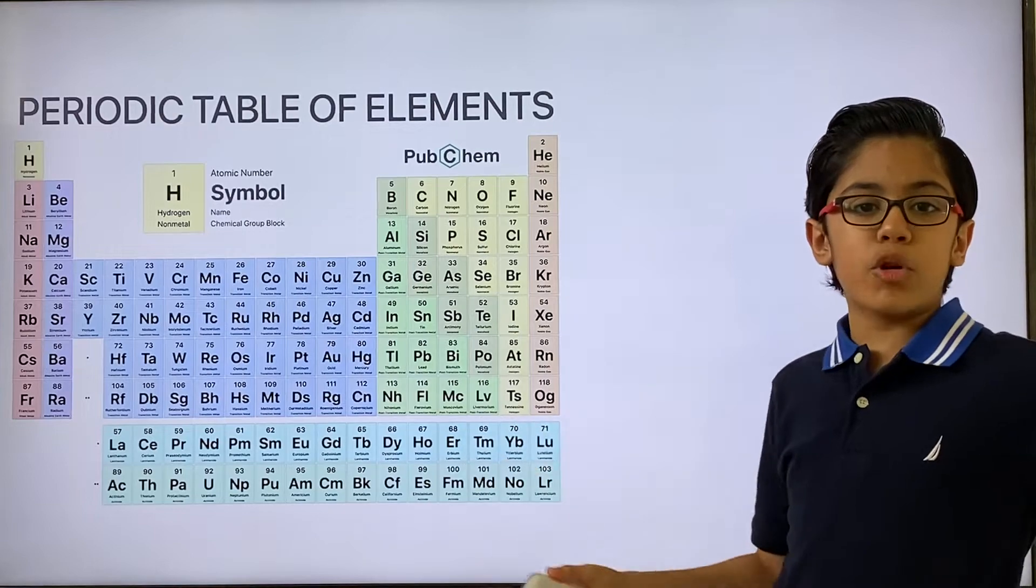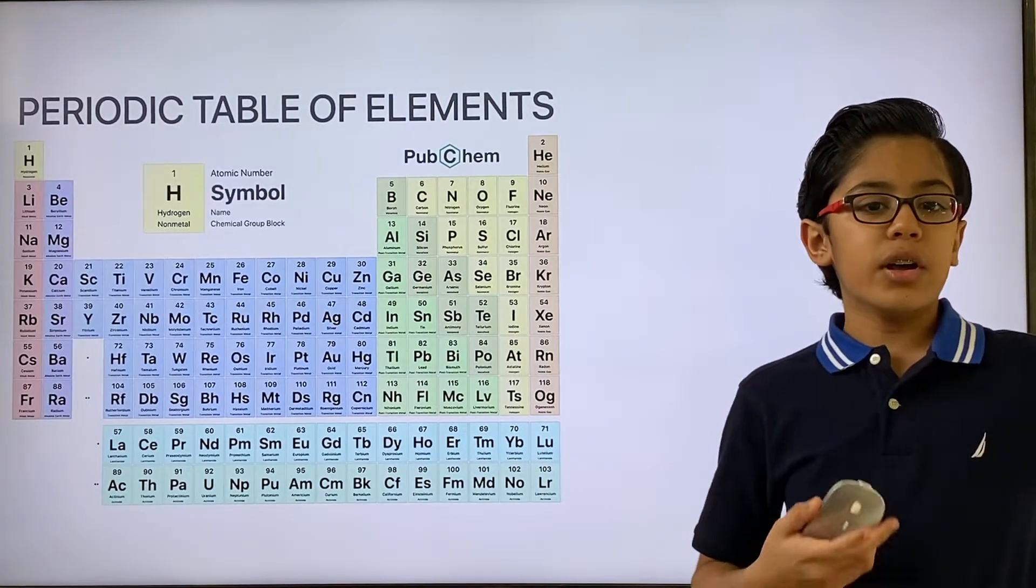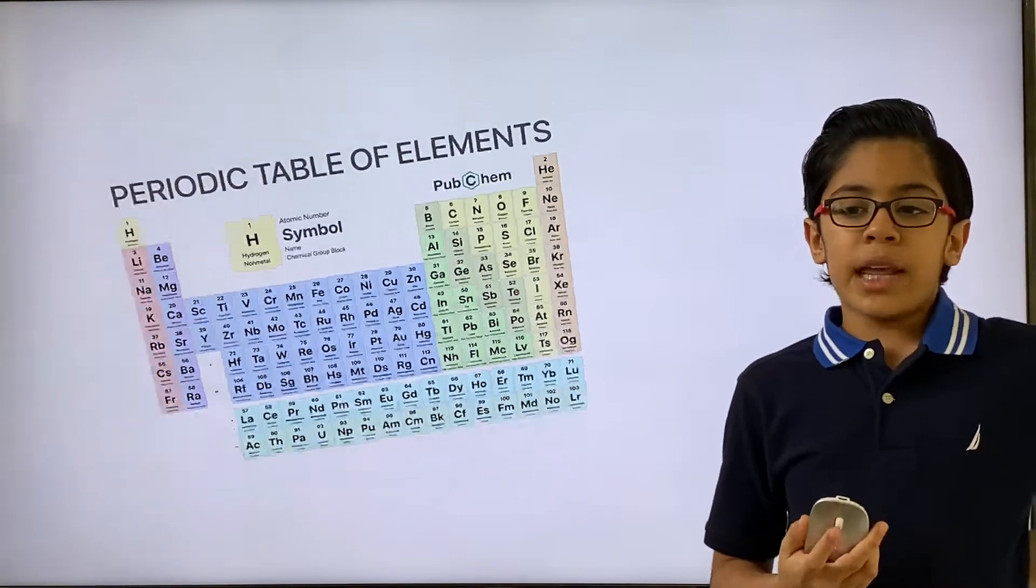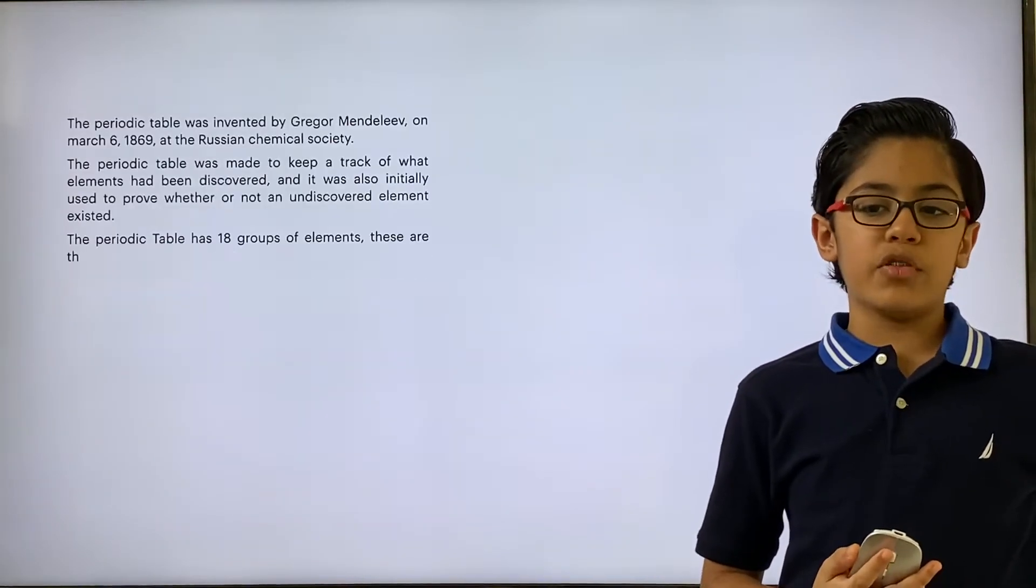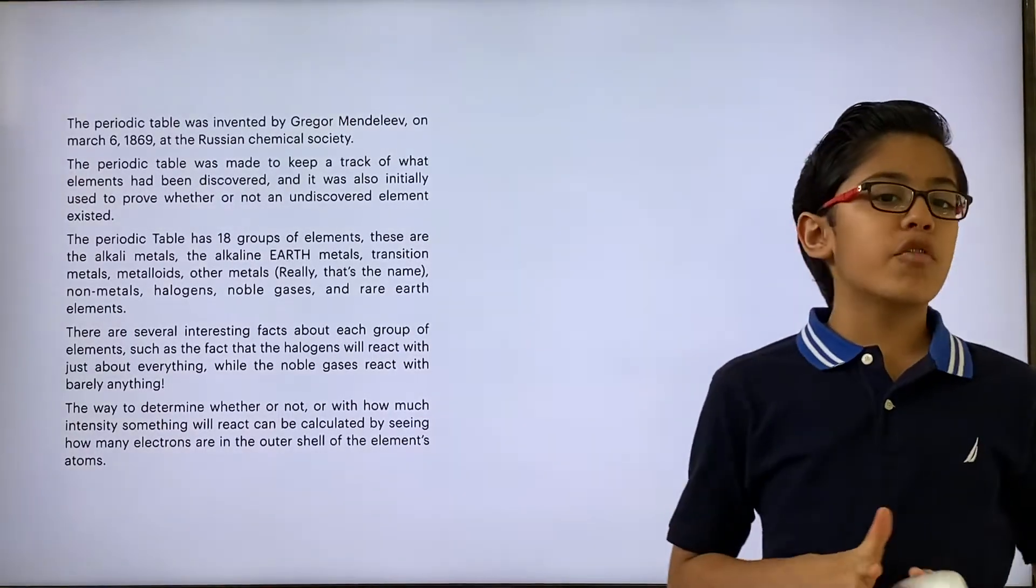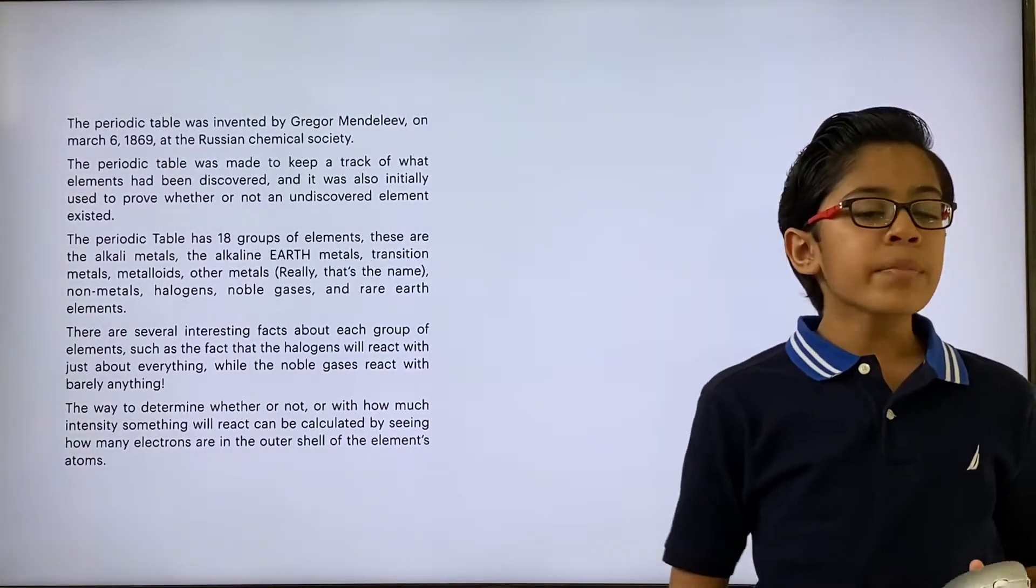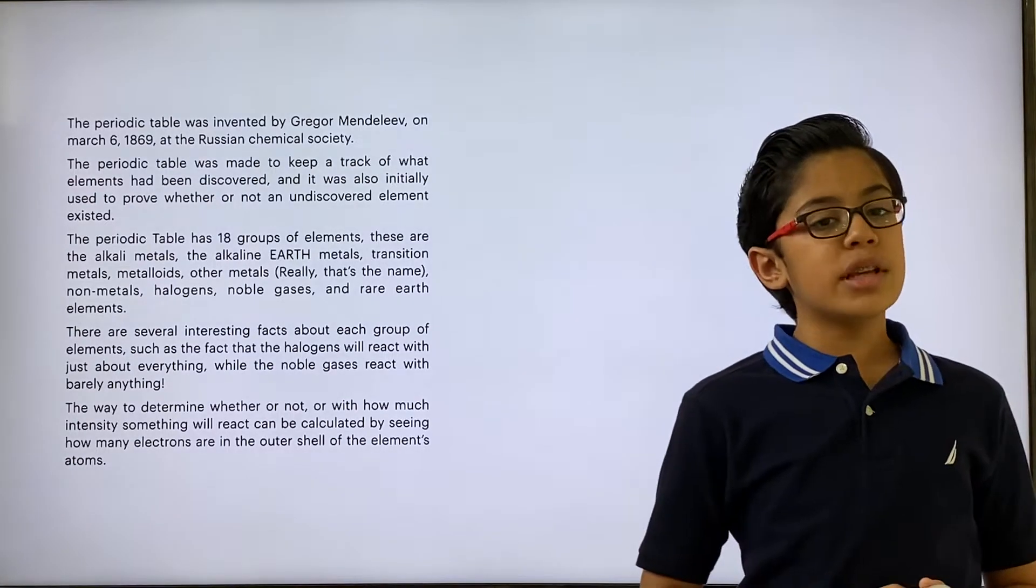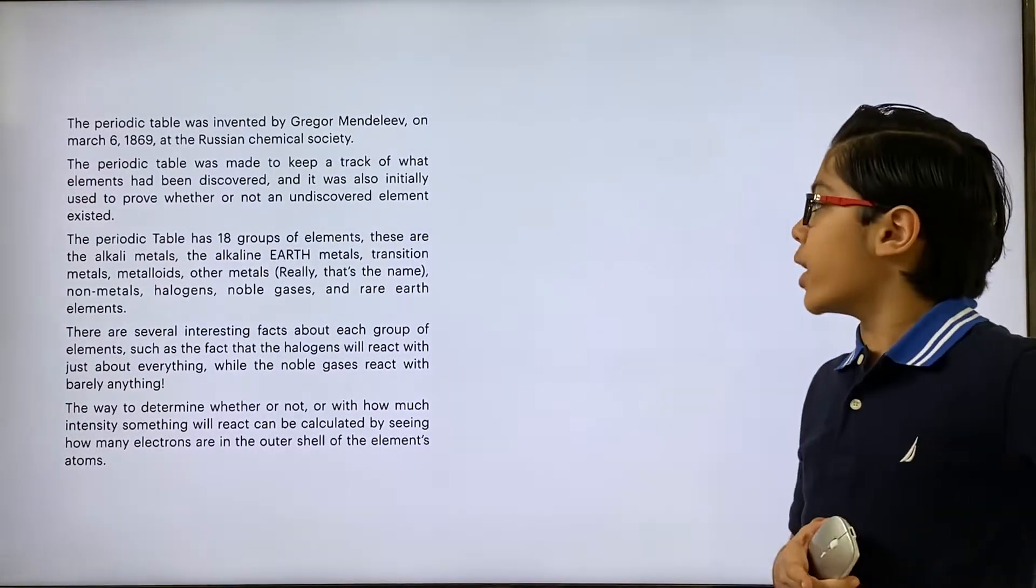It's basically a summary of all the elements we have to this day. The periodic table was first created in 1869 by a Russian chemist named Gregor Mendeleev. He made the periodic table to keep track of what elements had been discovered and also to use it to prove or disprove the existence of new elements.